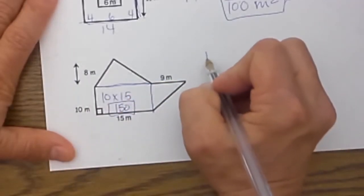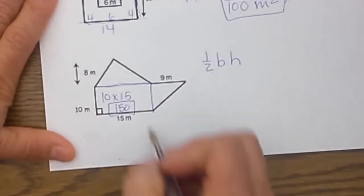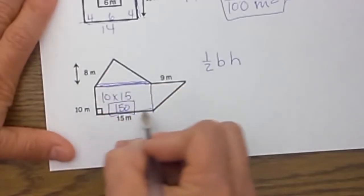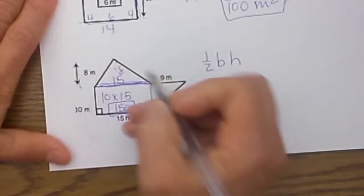Now this triangle. Remember the area of a triangle is 1 half the base times the height. We need to know the base of this triangle, which we do because it is parallel to this piece, so that is 15 and the height inside here is 8.